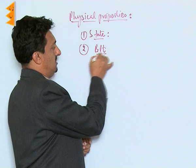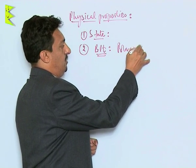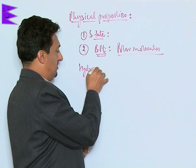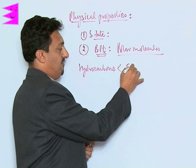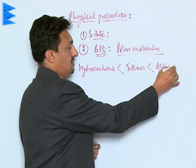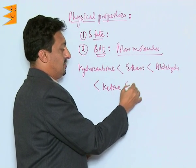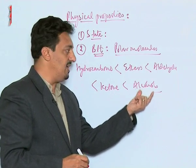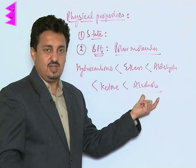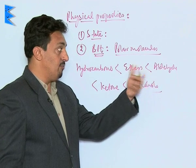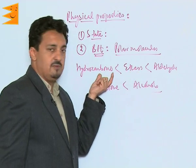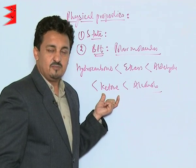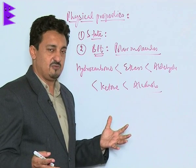Let us talk about their boiling points. All of these are polar molecules, and that is why their boiling points are higher than the corresponding hydrocarbons. The general order of increasing boiling points is: hydrocarbons, then ethers, then aldehydes, then ketones, and then alcohols. Alcohols have hydrogen bonding, whereas aldehydes and ketones cannot have hydrogen bonding, so their boiling points are lesser than the corresponding alcohols. But since they are more polar than ethers, their boiling points are higher than ethers. Among aldehydes and ketones, ketones have higher boiling points than the corresponding aldehydes — both being functional isomers — because more charge dispersal takes place in ketones, resulting in stronger intermolecular forces.